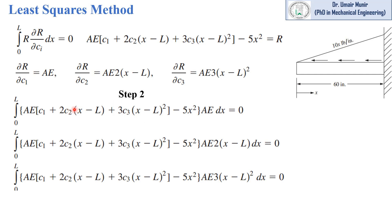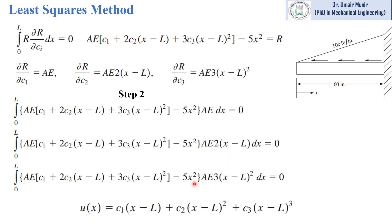In step two of the least square method, we have three equations in which the residual function R is multiplied by the partial derivatives and set equal to zero. From these three equations, we find the values of c1, c2, and c3 by solving simultaneously. When we substitute these coefficients into the axial displacement function, we can find the value of u as a function of x at any point on the rod.